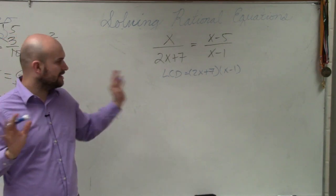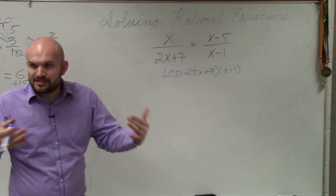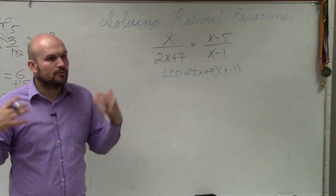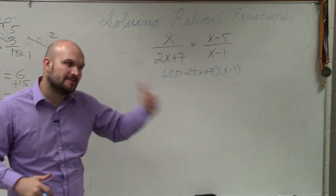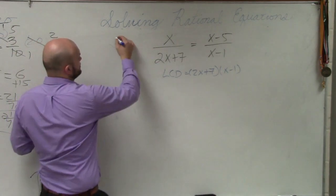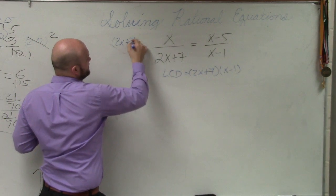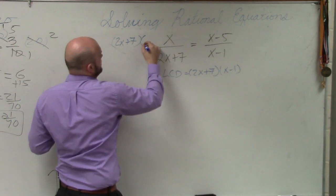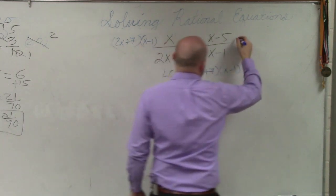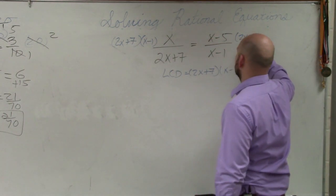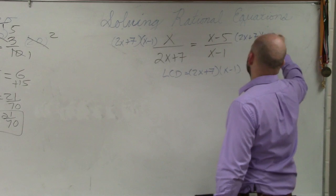Is everybody OK with what I did? Now, we're not adding or subtracting, so we don't need to get common denominators. We're trying to solve, so we want to eliminate the fractions. So I multiply by 2x plus 7 times x minus 1. Over here, I multiply by 2x plus 7 times x minus 1.